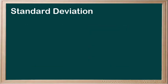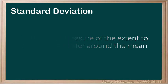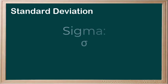This is done by finding the standard deviation. The definition of standard deviation is a measure of the extent to which data cluster around the mean. In other words, the standard deviation is a measure of how spread out the numbers are in a dataset, and is shown by the Greek letter sigma.